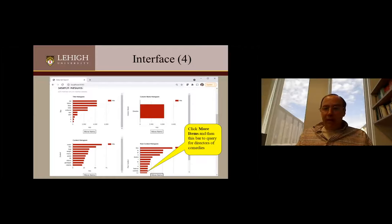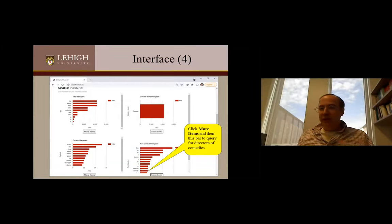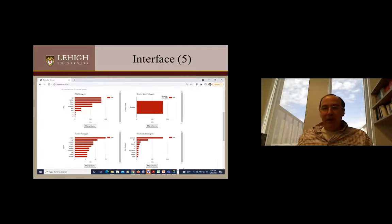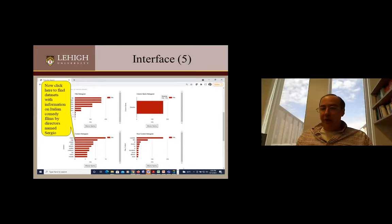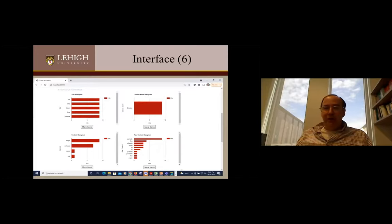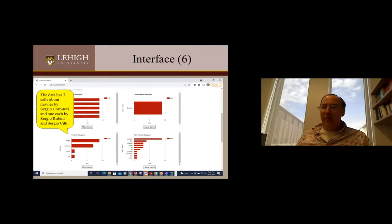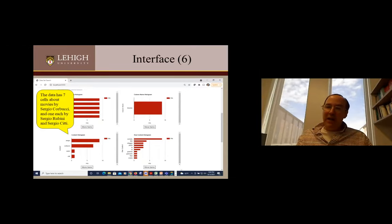If I wanted to look at the row context, there's a 'more items' option — it shows the first 10 by default but I can click for more, and get down to 'comedy' in the row context. So I'm now interested in directors of Italian comedies. The interface processes this and we're down to a number of directors. If I click on 'Sergio,' I get all directors named Sergio of Italian comedy films — essentially three names: Sergio Kobucci, Sergio Rubini, and Sergio Setti. You can explore the data set and focus in without needing the information in the metadata. You can make contextually specific queries.